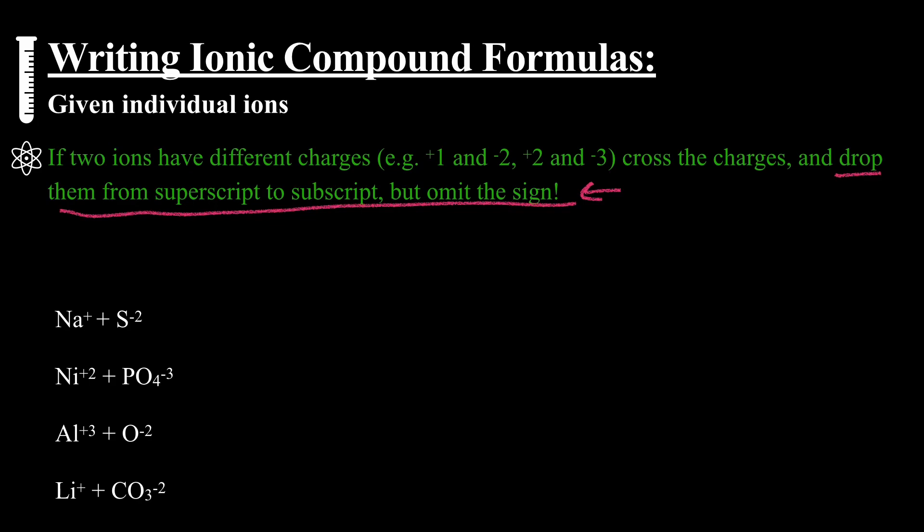So Na plus, S two minus. The plus one on the Na, we don't really write one, so we don't worry about that. That would go to the S. The two minus would go to the sodium, and so we'd wind up with Na2S.